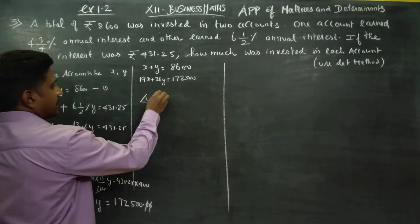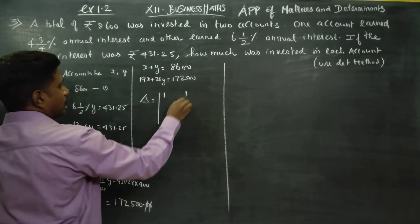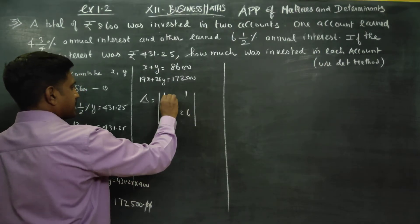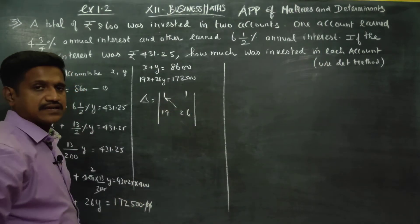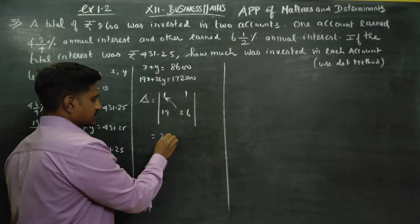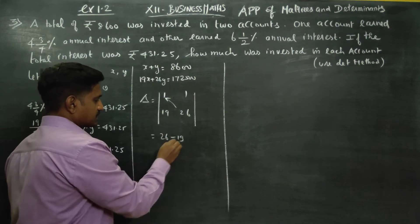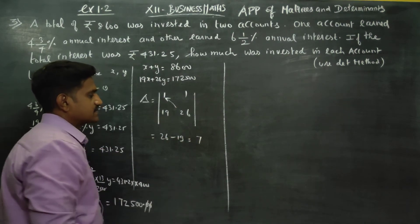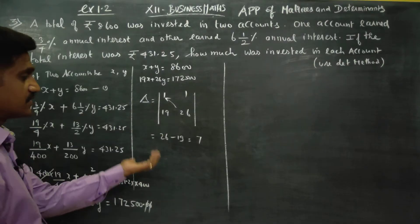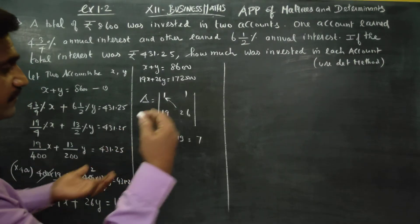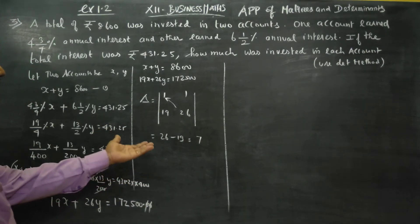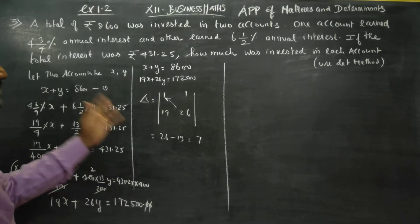Delta — the matrix is: 1, 1 and 19, 26. Right-hand side minus left-hand side: 26 into 1 is 26, minus 19. So the answer is 7. Delta equals 7.